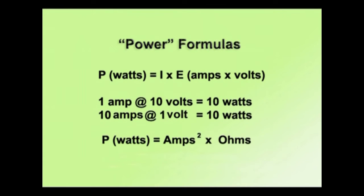Here are our power formulas. P, power in watts, equals I (amps) times E (volts). So watts equals amps times volts. That means one amp at 10 volts equals 10 watts of actual power, and 10 amps at one volt is the same 10 watts of power. Multiplying those two together equals watts – the actual amount of work and power done. The second part is that P (watts) equals amps squared times ohms. This is the other part of the power formula, though it's not very applicable in solar energy.